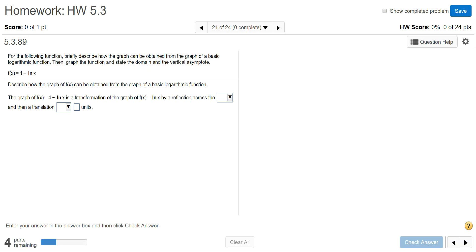So our original graph, or the graph that we want to graph, is f(x) equals 4 minus natural log of x. Natural log of x is a logarithm with a base of e.